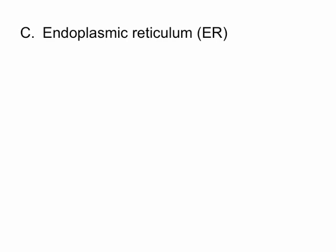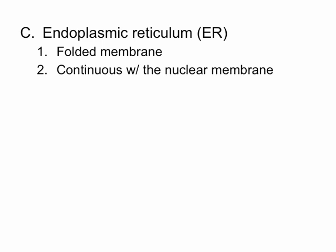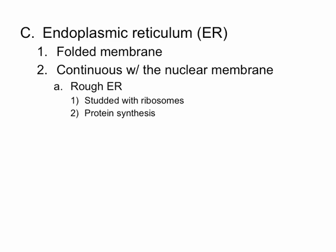The endoplasmic reticulum, or ER as it's sometimes referred to, is basically a folded membrane that is continuous with the nuclear membrane. The outer layer of that nuclear membrane folds back and forth on itself and creates the endoplasmic reticulum. There are two types. The first is called the rough ER, named rough because it's studded with ribosomes. Since it's studded with ribosomes, the function of the rough ER is protein synthesis.